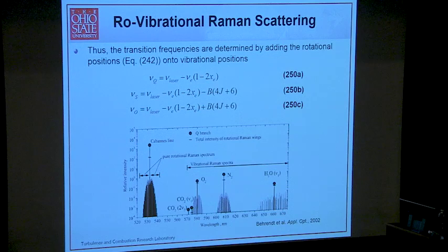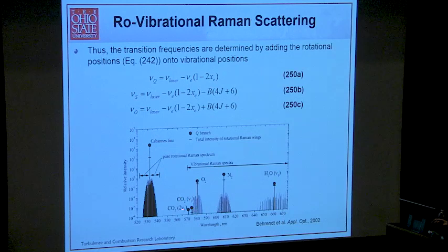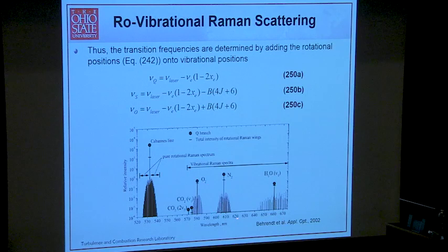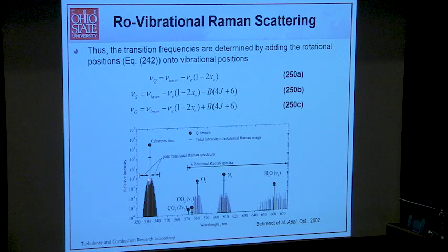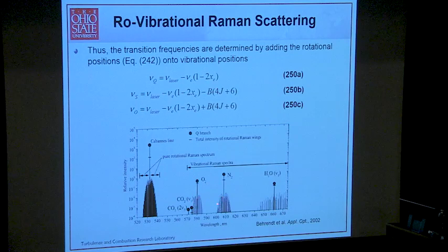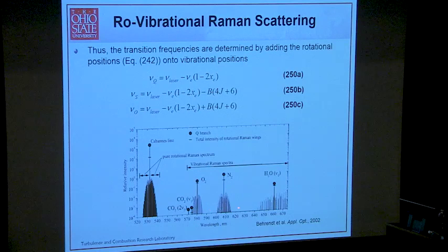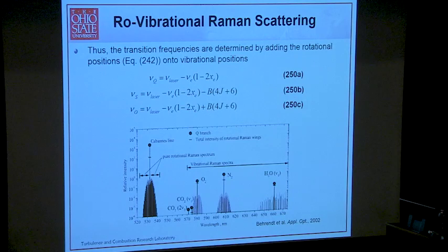You can see the big difference in signal strength. Moving down from pure rotational Raman, the vibrational lines are another one to two orders of magnitude lower. Integrating across all contributions, it's about a factor of three difference per individual line versus the full spectral contribution. In general, vibrational Raman spectra are about a factor of 1000 weaker than Rayleigh scattering.